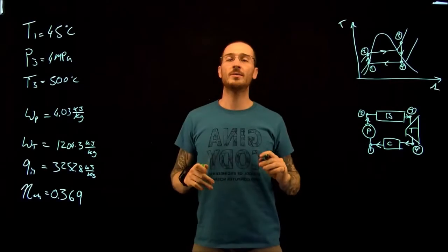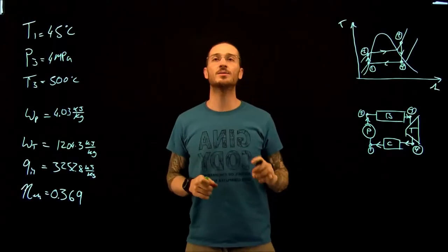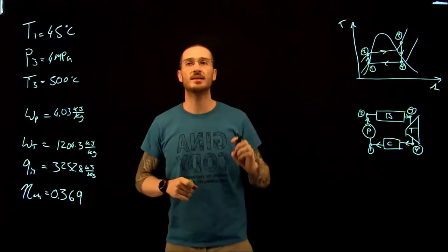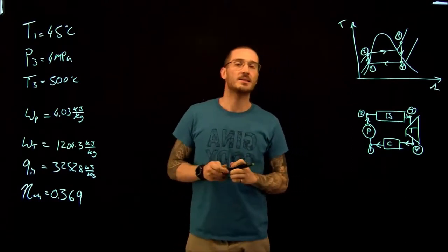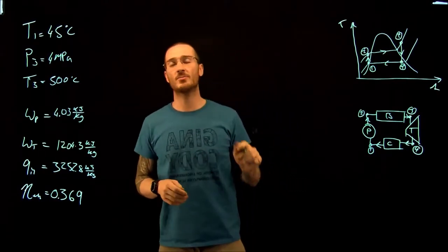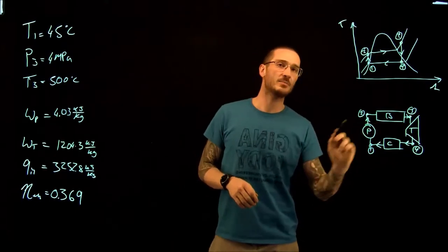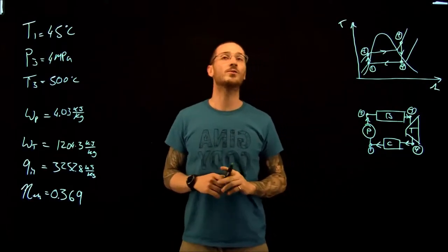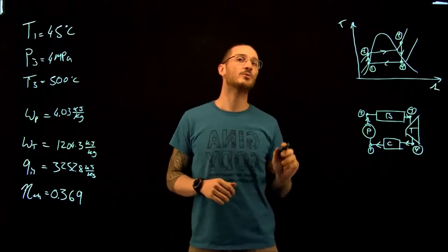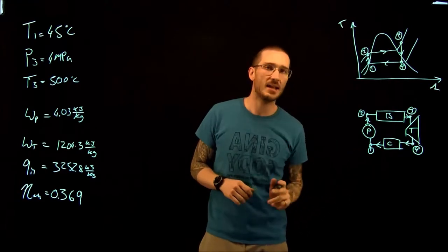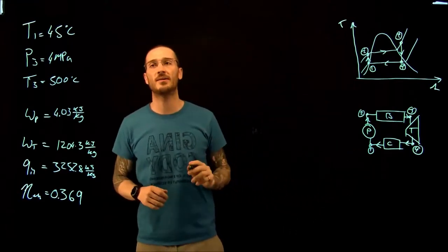We're going to be looking at steam-powered cycles, more specifically simple Rankine cycles. The problem statement is a continuation of the previous problem where we were told that the exit pressure of the boiler was 4 megapascals, the maximal temperature was 500 degrees C, and the exit temperature of the condenser was 45 degrees C.